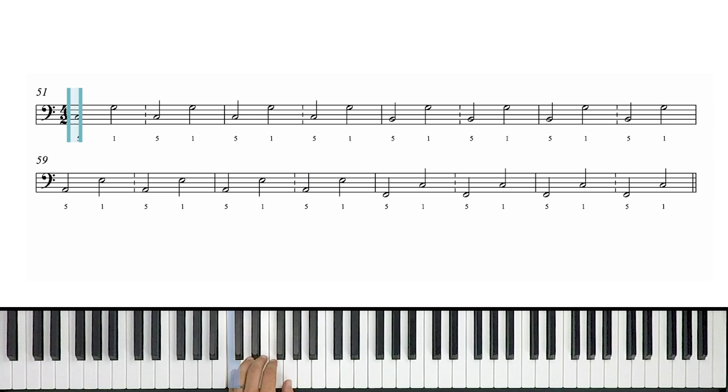Our first note is C, and we toggle between that C and this G. So let's get our hand in this position. We're going to go back and forth. C, two, G, four. One, two, three, four. As you can see, we have four measures of that.